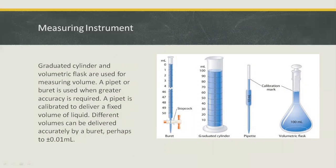A pipet is calibrated to deliver a fixed volume of liquid. Different volumes can be delivered accurately by a burette, perhaps to ±0.01 milliliters.